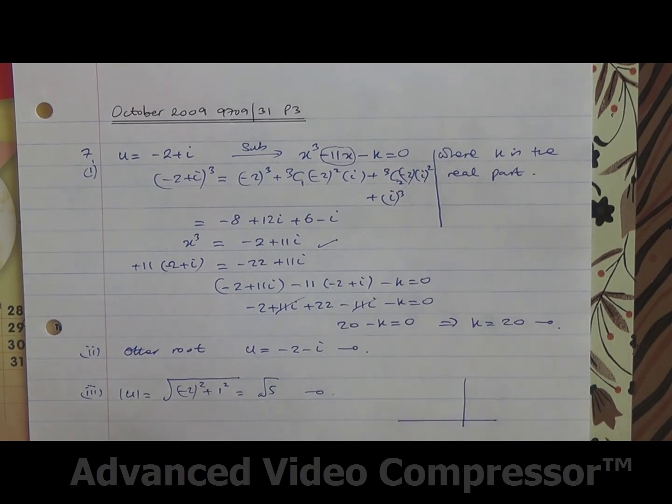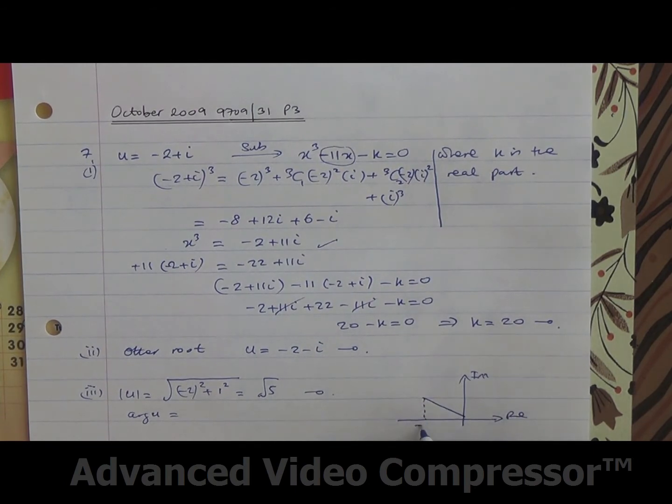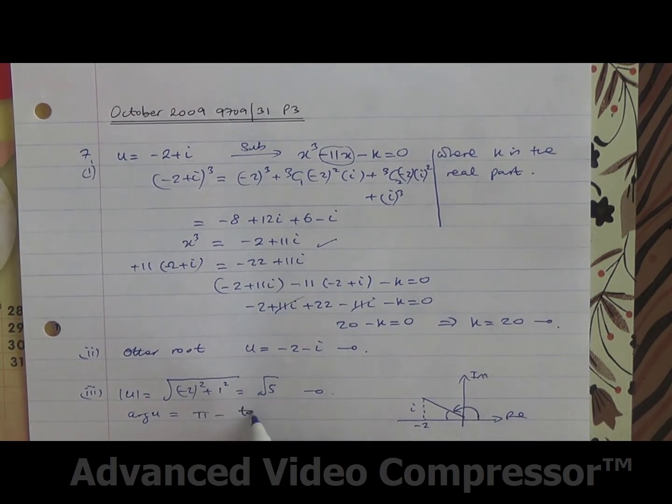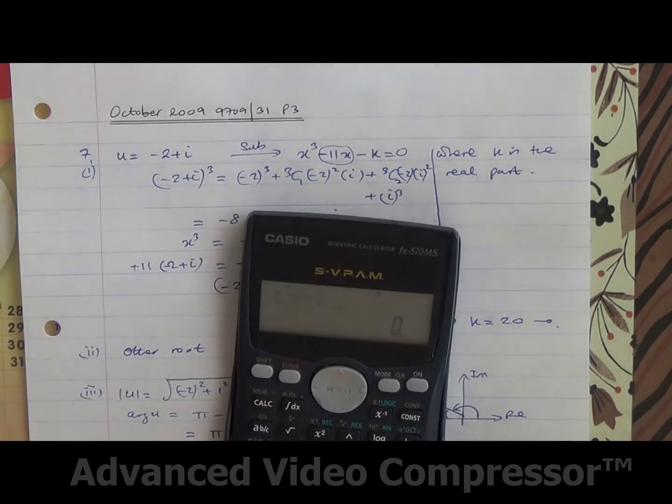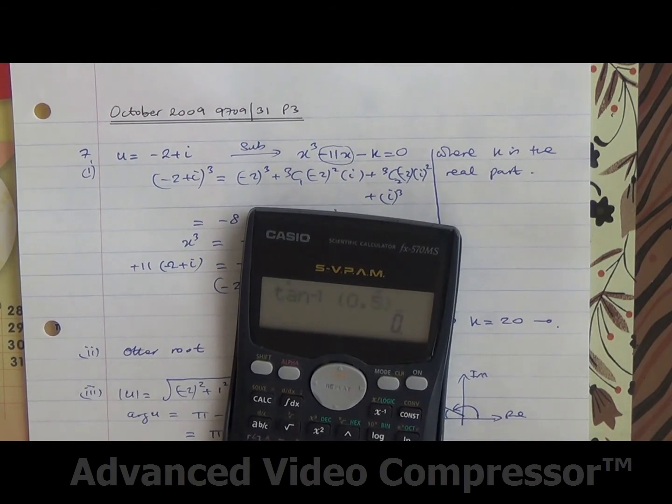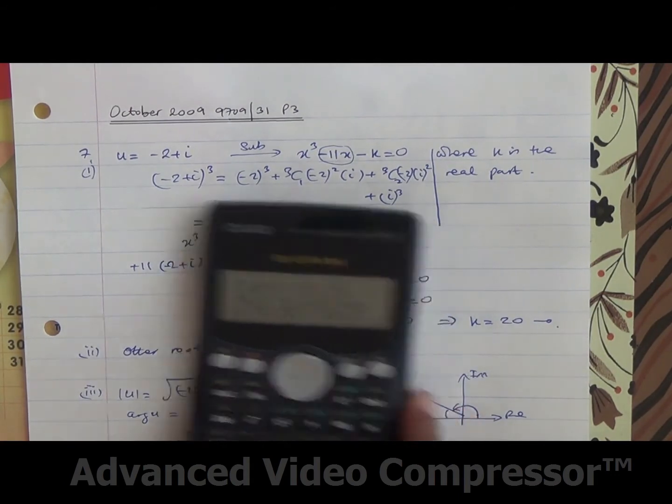And then the argument of u. The argument of u is going to be, we represent this in an Argand diagram. So this is going to be minus 2, and this is going to be equal to i. Therefore, this is the argument. So that's going to be then pi minus the inverse tan of 1 over 2. And work that out, you're going to get pi minus the inverse tan of 0.5, 0.46364 and so on.